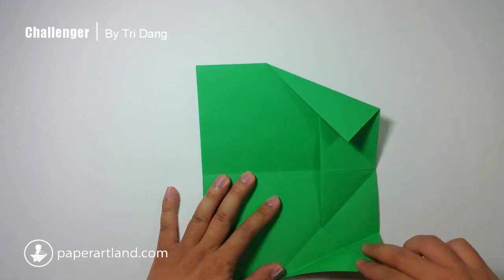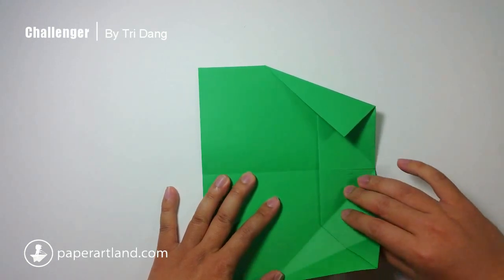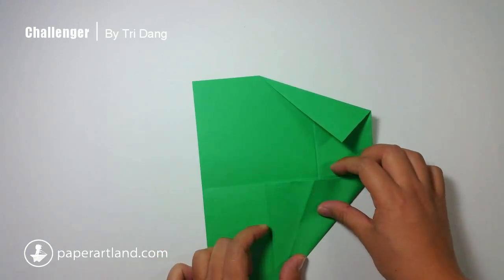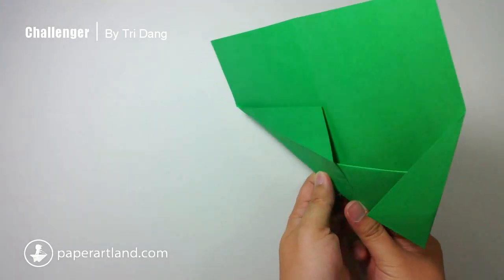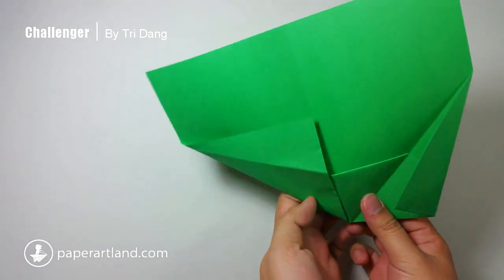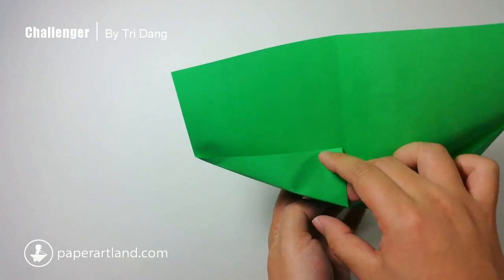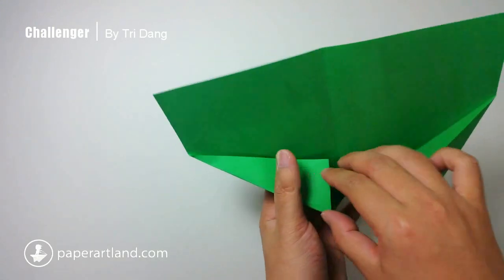Next, unfold this side of the paper again. And then, fold it straight like this. And now, I will hold the paper up, and then push this layer into the pocket right here.